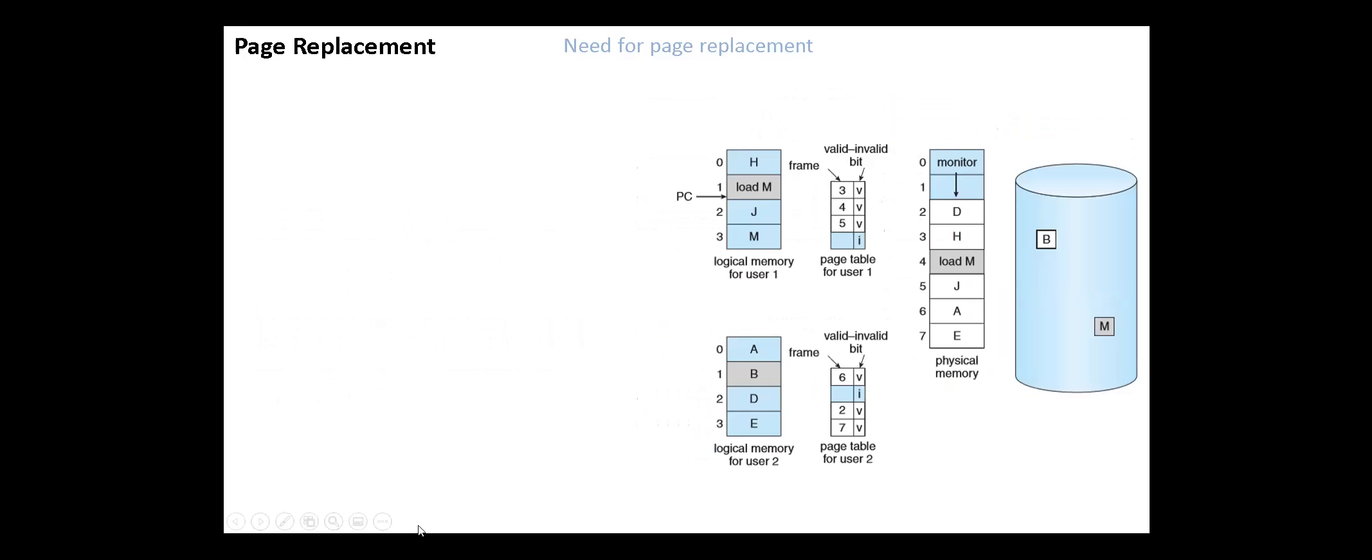At this point, the operating system has several options. It could terminate the user process. However, demand paging is the operating system's attempt to improve the computer system's utilization and throughput. Users are not aware that their processes are running on a demand paged system. Paging should be transparent to the user, so this option is not the best.